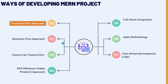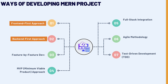For the backend first approach, we begin by setting up the backend with Node.js and Express, then create RESTful API or GraphQL endpoints first. We use tools like Postman for testing APIs. This is ideal for data-driven applications where backend logic and data handling are the core. After the backend is robust and tested, we develop the React front-end to consume the APIs.